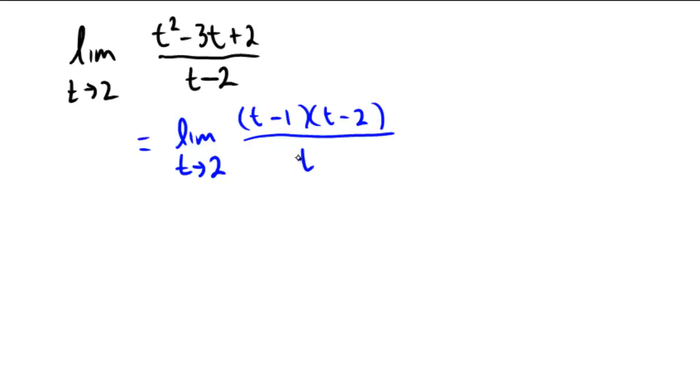On the bottom, it's just the quantity t minus 2. And so those will cancel out, leaving us with simply a limit as t goes towards 2 of the quantity t minus 1.